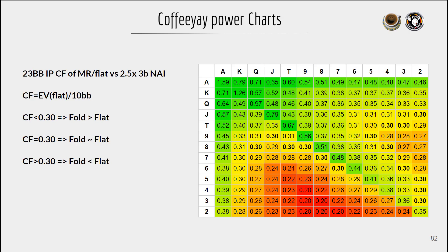This will work only to some level of precision because the range that you'll be facing will be different. As we've seen, GTO ranges are very mixed and they don't change that much with differences in sizes — they sort of are a range themselves. But in some sense, that's obvious because we need to adjust to our opponents.